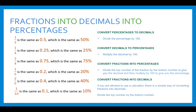Here is a quick breakdown of how to convert fractions into decimals and percentages. One half equals 0.5, which equals 50%. A quarter equals 0.25, which equals 25%. Three quarters equals 0.75, which equals 75%, and so forth. You can pause the video and look at all of these conversions.